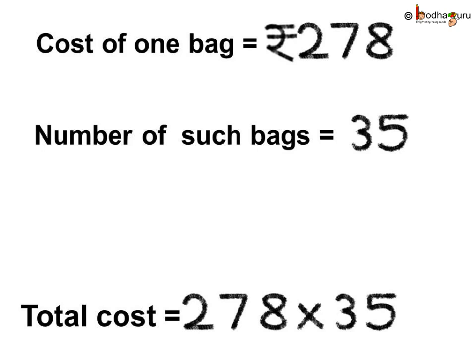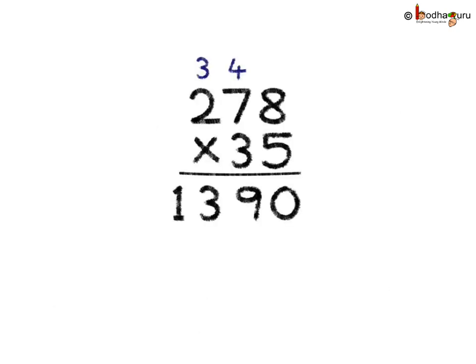Since we need to find the cost of 35 bags and we know the cost of one bag, we need to multiply the cost of one bag with the total number of bags, which is 35. So the total cost is equal to 278 multiplied by 35. Let us multiply: 278 multiplied by 35.